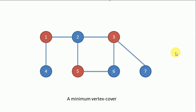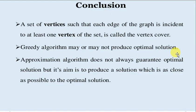So it is the final answer, a minimum number of vertex cover. Let's conclude. A set of vertices such that each edge of a graph is incident to at least one vertex of the set is called the vertex cover. It is a greedy algorithm. A greedy algorithm may or may not produce an optimal solution. Approximation algorithm does not always guarantee optimal solution, but its aim is to produce a solution which is as close as possible to the optimal solution. By this we end this lecture. Thank you for watching.